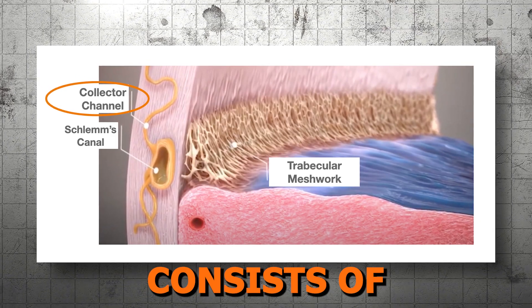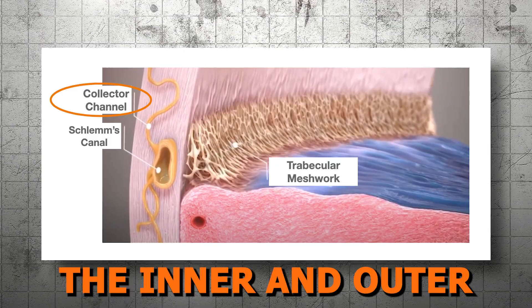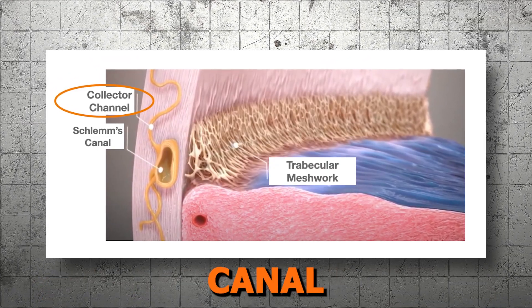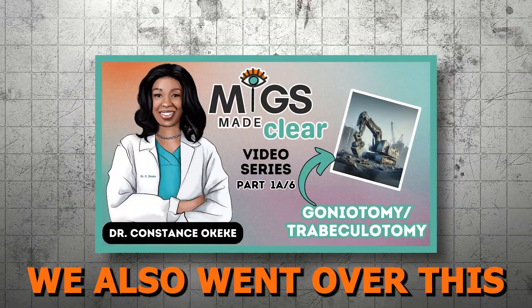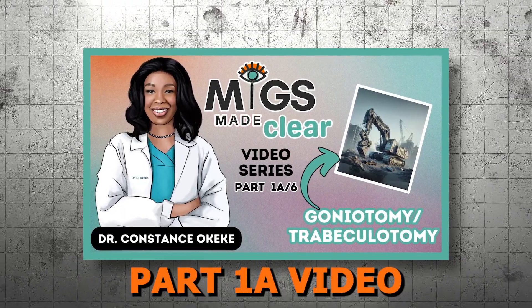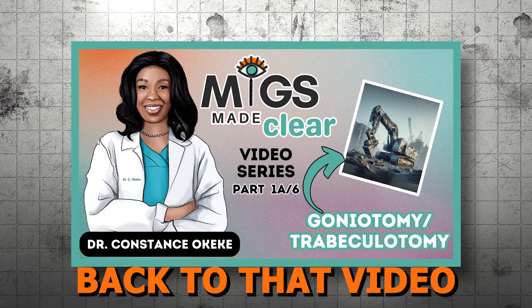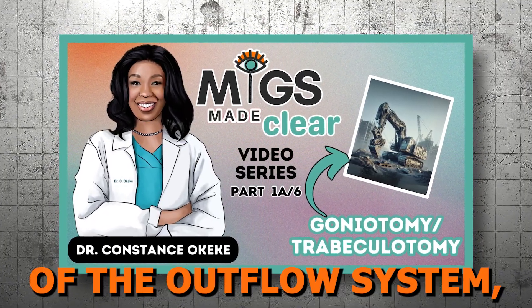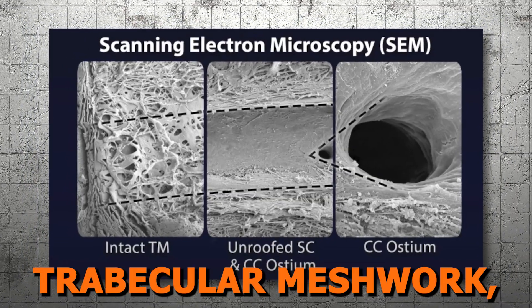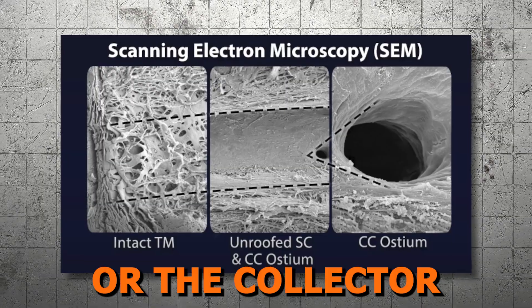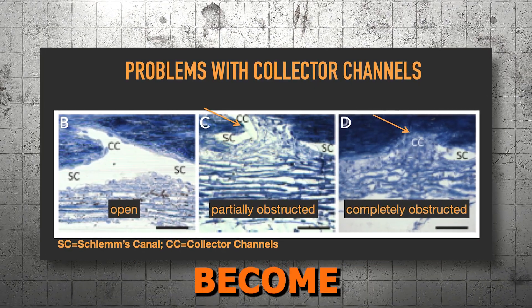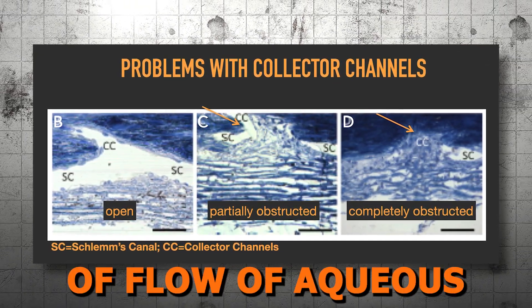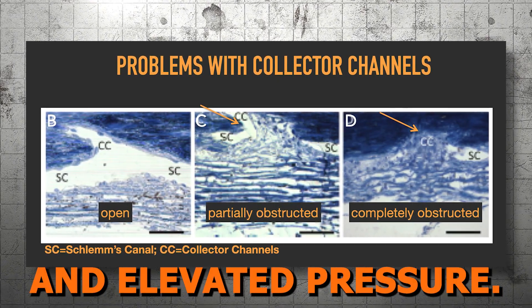Lesson 2: Understanding Flow and Obstruction of the Outflow System. The outflow system consists of these key structures: the trabecular meshwork, the inner and outer wall and lumen of Schlemm's canal, and the collector channels. These are all the main areas where obstruction or damage can affect the outflow system. At any point of the trabecular meshwork, the lumen or walls of Schlemm's canal, or the collector channels, the tissue can either get clogged with debris or herniations, get fibrotic where the pores become really small and rigid, which limits the amount of flow of aqueous humor and results in an increase in resistance and elevated pressure.